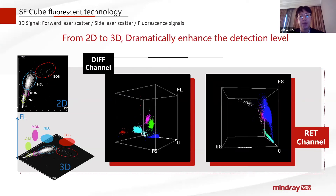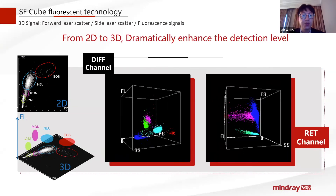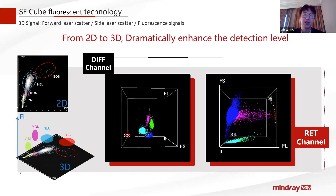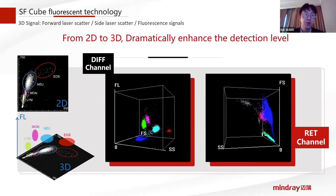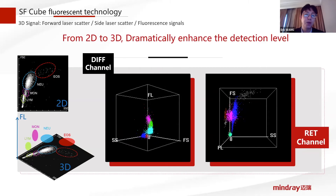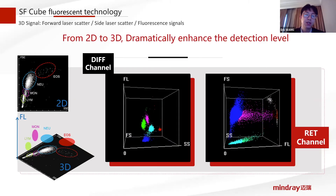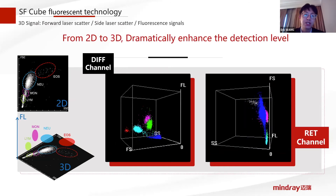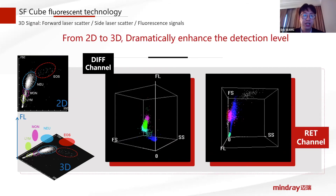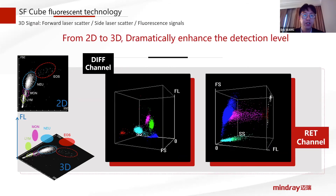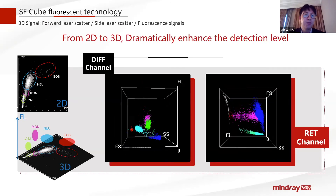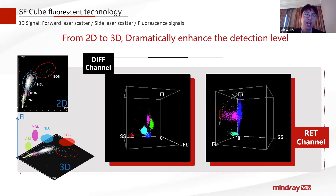Before talking about new technologies, I'd like to briefly introduce our 3D SQA fluorescence technology first. As we all know, although white blood cells account for only about one percent of the total cellular population, reliable WBC results are always the most important clinical requirement. With the help of fluorescent signals, we can dramatically enhance detection levels and provide accurate abnormal cell detections.